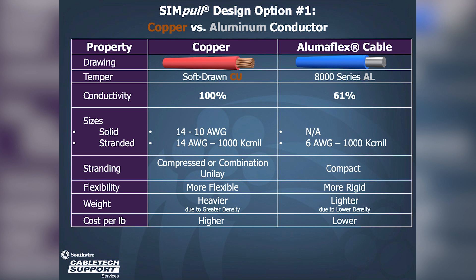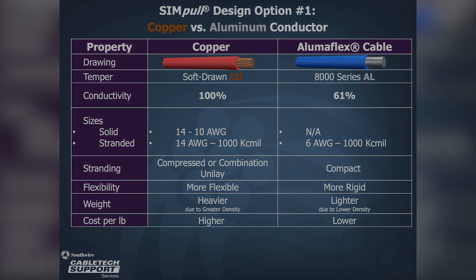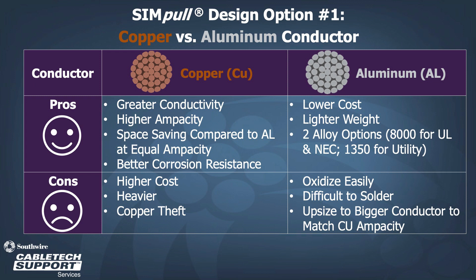Aluminum offers a lighter weight and lower cost product compared to copper. Looking at the pros and cons of each conductor material, copper conductors offer greater conductivity, higher ampacity, space savings compared to aluminum conductors of equal ampacity, and better corrosion resistance. The cons are higher cost, heavier product, and copper theft.